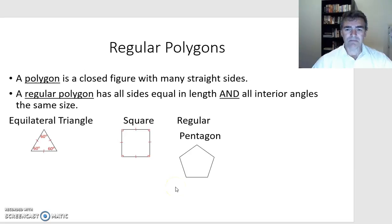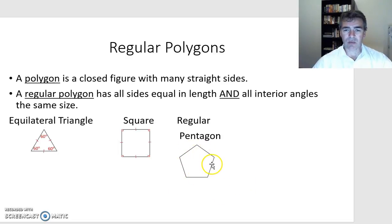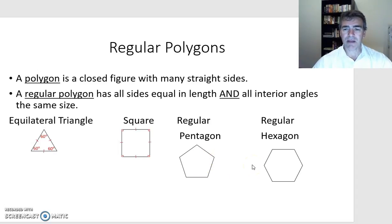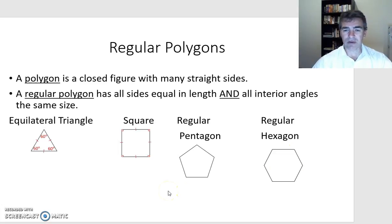A regular pentagon has five sides — all five sides are the same and all interior angles are the same size. You could have a pentagon with all sides the same but where one vertex comes inside, making it a concave pentagon — all sides would still be the same but the interior angles would not be. Similarly, a regular hexagon has all sides the same length and all interior angles the same, and we can do that for the heptagon, octagon, nonagon, and decagon as well.